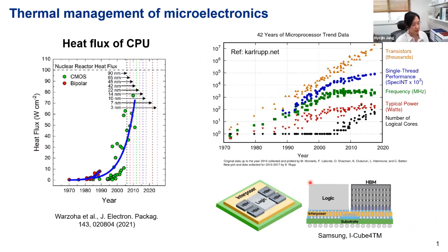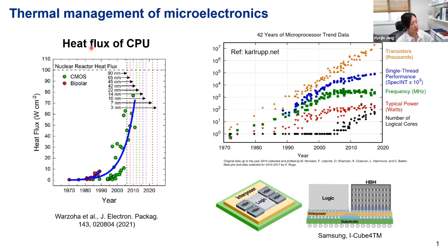Before going directly into the lecture, I'd like to highlight the thermal management of microelectronics. The figure on the left shows the heat flux trend of CPUs over the years, and you can see the heat flux has been increasing very rapidly. Even before 2020, the heat flux already overcomes the level of a nuclear reactor. If we do not remove that heat flux properly, heat will accumulate in your CPU and eventually destroy device operation. Device failure due to overheating is one of the most common failure reasons — this is an important engineering problem.